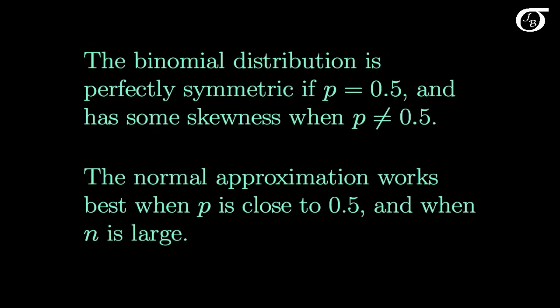The binomial distribution is perfectly symmetric if P is exactly equal to 0.5, and we'll have some skewness when P is not equal to 0.5. The normal distribution is a symmetric distribution, so the normal approximation is going to work best when P is close to 0.5, and it's going to work better and better as we get a larger and larger sample size.